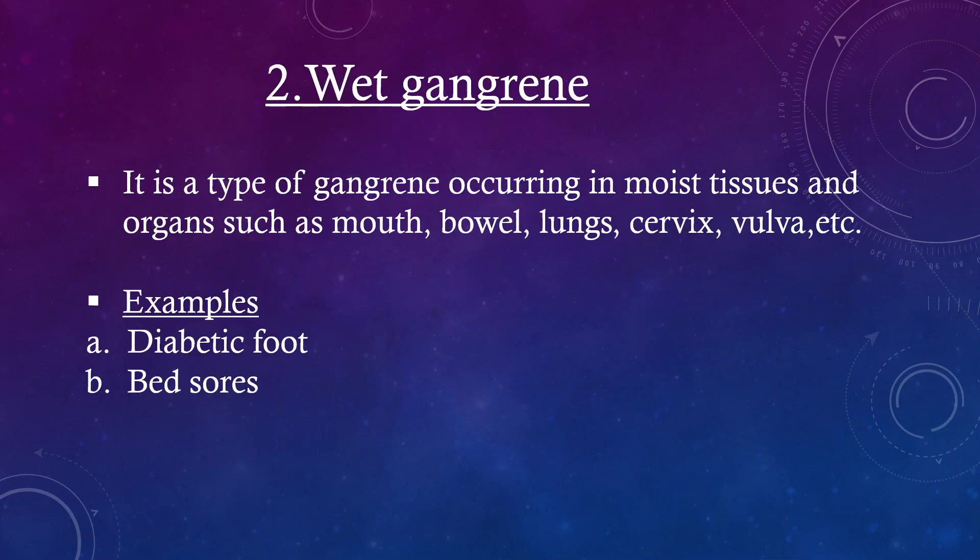Wet gangrene is a type of gangrene occurring in moist tissues and organs such as the mouth, bowel, lungs, cervix, vulva, etc. Examples include diabetic foot and bed sores.